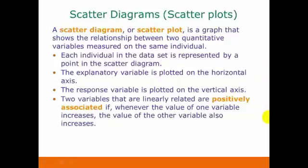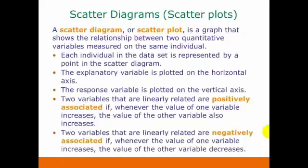Once we have all the data points plotted, we can look at the resulting picture and get an idea whether the variables are linearly related or not. We say that they're positively associated if whenever the value of one variable increases, the value of the other variable also increases. And negatively associated if whenever the value of one variable increases, the value of the other variable decreases.